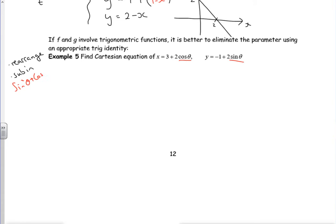And the easiest one is sine squared theta plus cos squared theta is 1. So if I rearrange both of these, I've got x minus 3, so take the 3, divide by 2. That's going to be cos theta. So then that tells us if I square it all, x minus 3 all squared over 4, 2 squared, is cos squared theta.